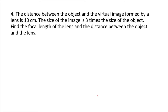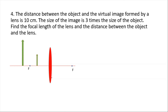The distance between the object and the virtual image formed by a lens is 10 centimeters. The size of the image is three times the size of the object. Find the focal length of the lens and the distance between the object and the lens. We need to find the object distance.